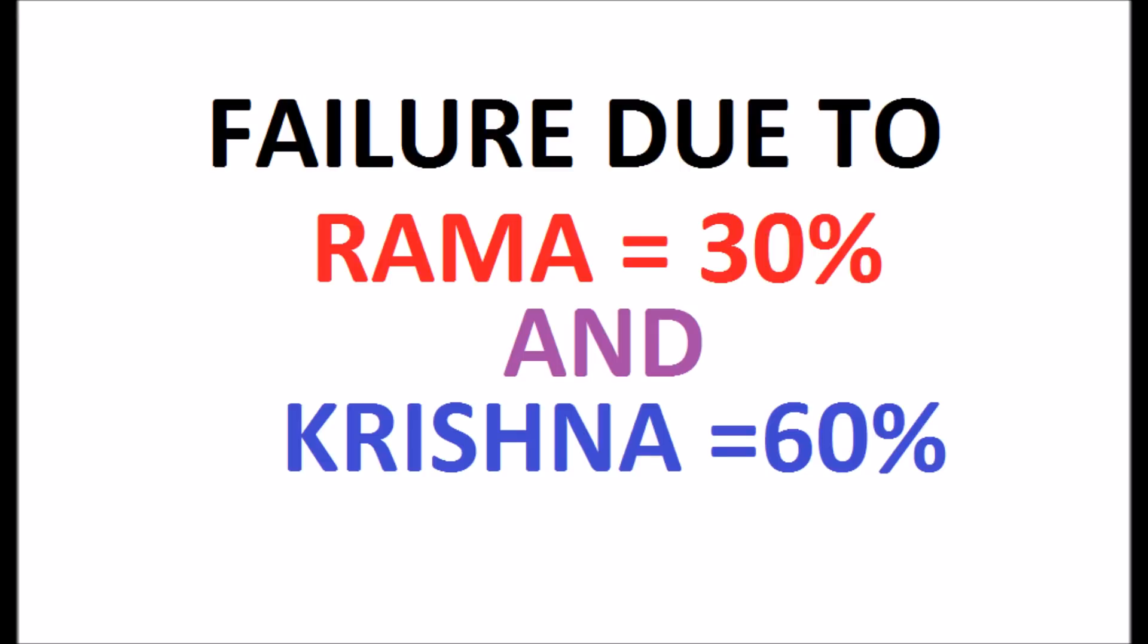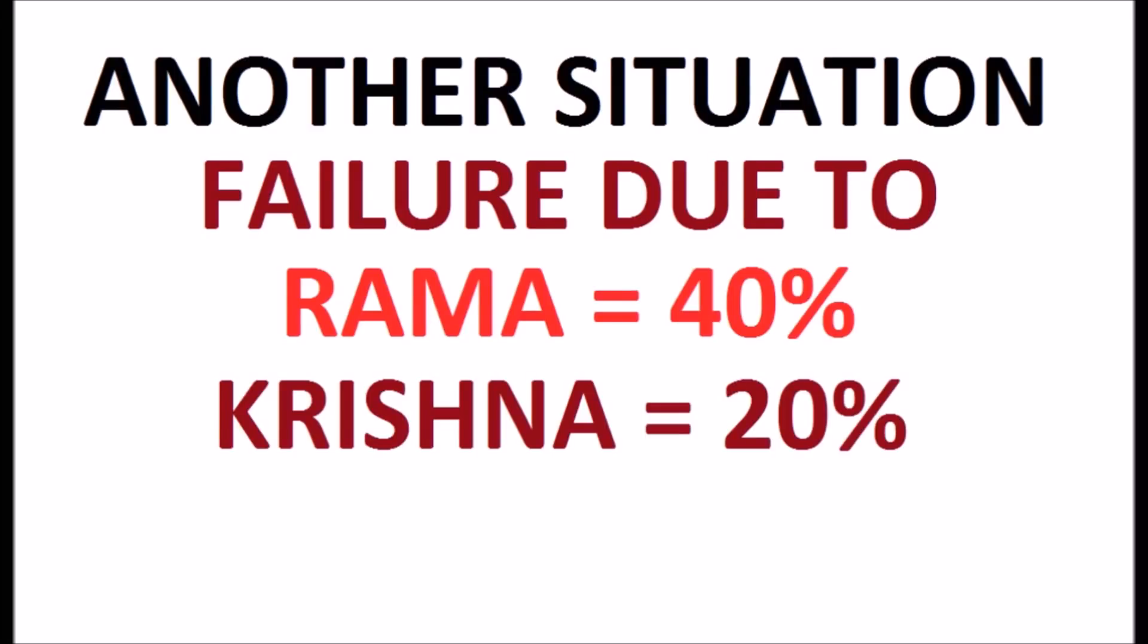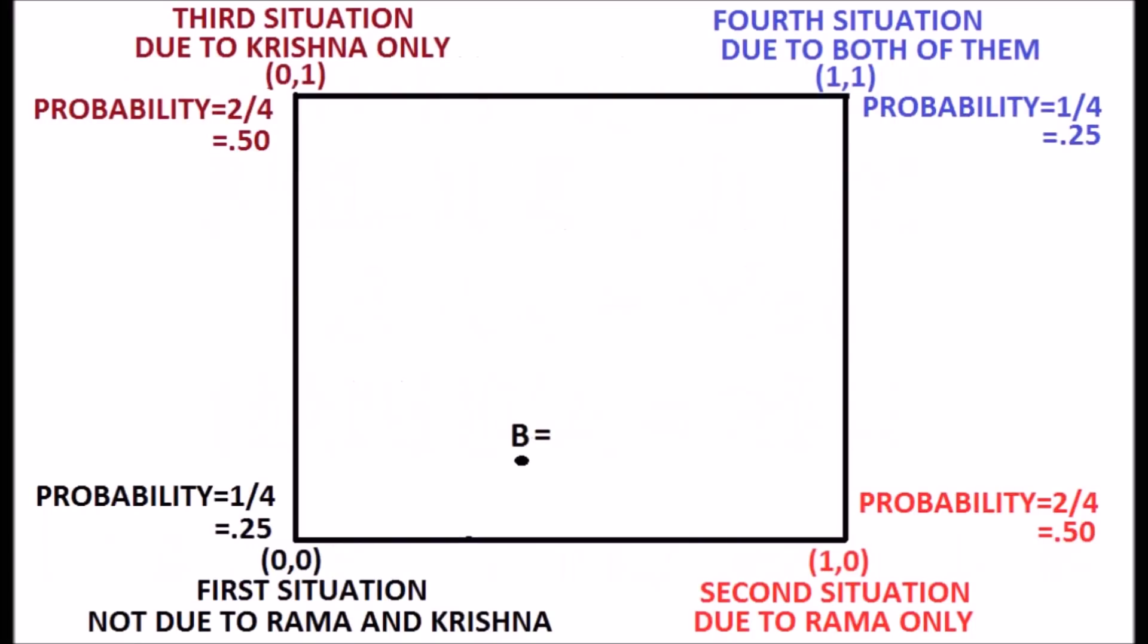Kindly see the video, probability and fuzzy logic concept realization with very simple example. At another situation, failure due to Rama is 40% and Krishna is 20%. This incident is represented by B. Mathematically, B is represented as a fuzzy set 0.4, 0.2. So, A and B are called two fuzzy sets.